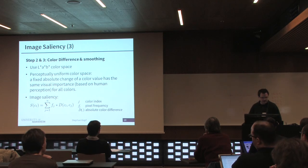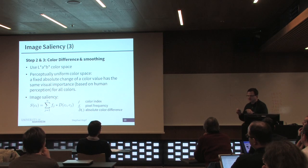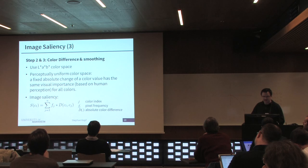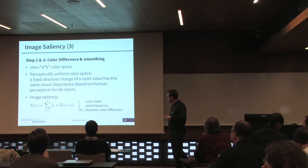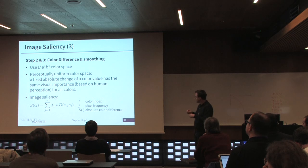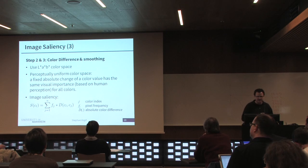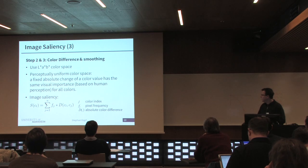To measure image saliency, we use LAB color space. The advantage is that if you take two values from this color space with a certain distance, it doesn't matter which colors you choose — it's always similar to the effect on the human visual system. We take the frequencies of a certain color from the histogram, compute the absolute color difference of the current color to all other colors, sum them up, and get a saliency value. We do this for all 200 colors and map them back to the image to get a saliency image.